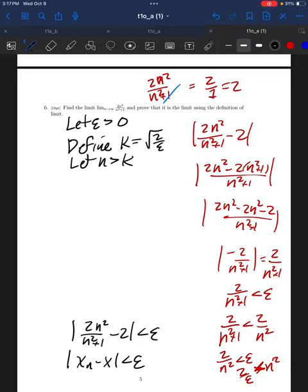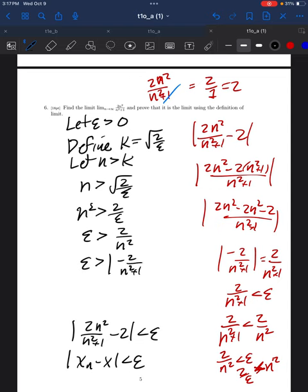So, k is square root of 2 over epsilon, if n is greater than k, n is greater than the square root of 2 over epsilon, n squared is greater than 2 over epsilon, epsilon is greater than 2 over n squared, epsilon is greater than the absolute value of negative 2 over n squared plus 1, which equals 2n squared over n squared plus 1 minus 2, and we're done.